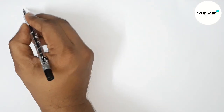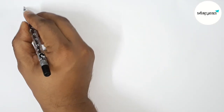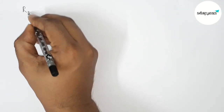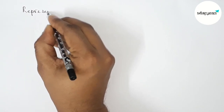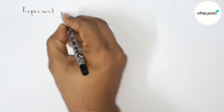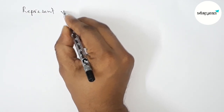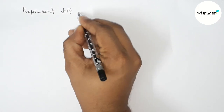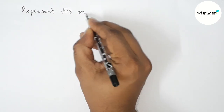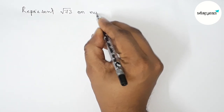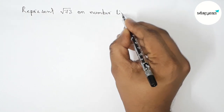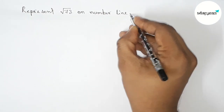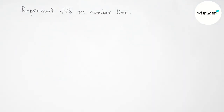Hi everyone, welcome to SI Share Classes. Today in this video we have to represent root 73 on a number line in an easy way. Please watch the video till the end. Let's start the video.